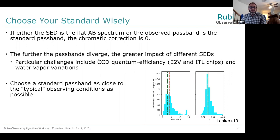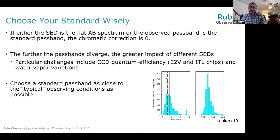The further passbands diverge, the greater the impact from different source SEDs — whether going from red to blue stars, different galaxy types, or Type Ia supernovae at different redshifts. Particular challenges include CCD quantum efficiency for LSSTCam: we have E2V and ITL chips with different QE as a function of wavelength, especially in the U and G bands. And then water vapor variations in the atmosphere affect the Z and Y bands. For DES, our standard passband was defined at three millimeters of water vapor, which is close to the median, minimizing chromatic effects.